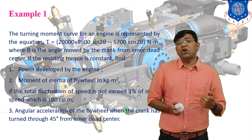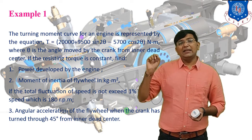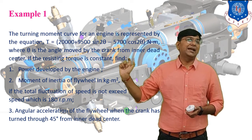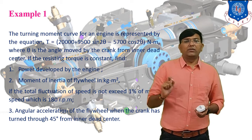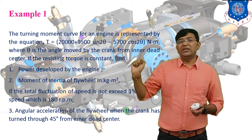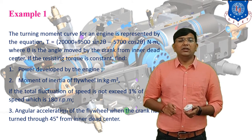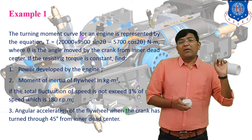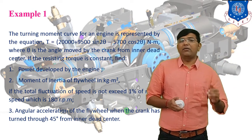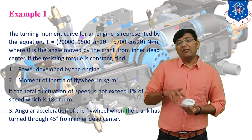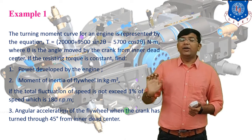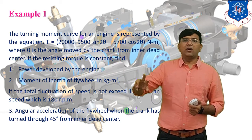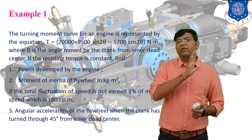The coefficient of fluctuation of speed is Cs equals (n1 minus n2) upon n. So the value of Cs is 1%, which means 0.01. The third thing to find is the angular acceleration of the flywheel when the crank has turned through 45 degrees from inner dead center. We have to find alpha using the equation torque equals I·alpha. To find alpha, we need values of torque and moment of inertia.